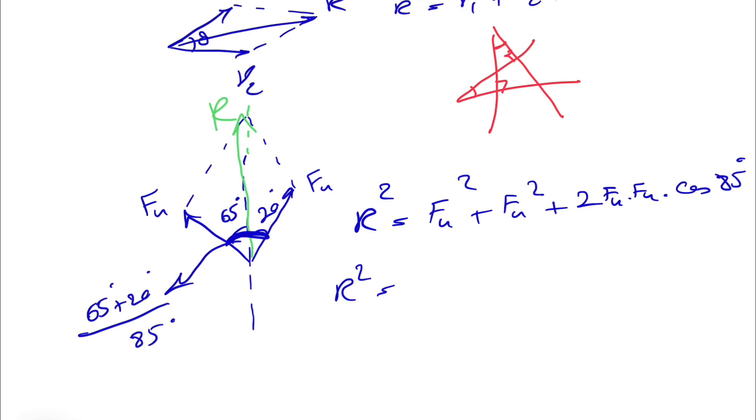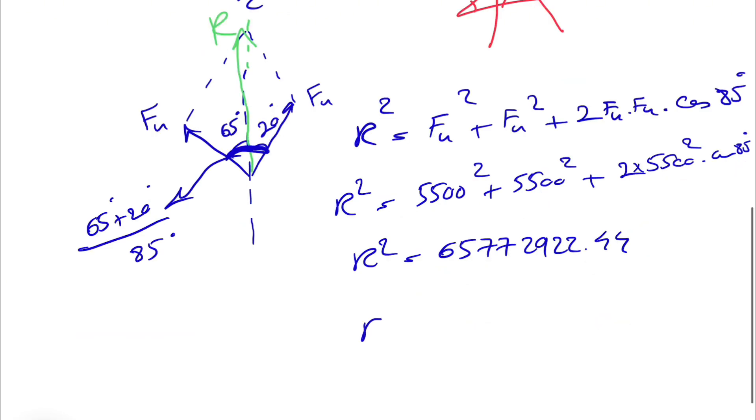And since our Fn is 5500, so we have 5500 square plus 5500 square plus 2 times 5500 squared cosine of 85. And if we calculate this, so this will be equal to 67... and our R would be the square root of the number above which will be 8110 newtons.